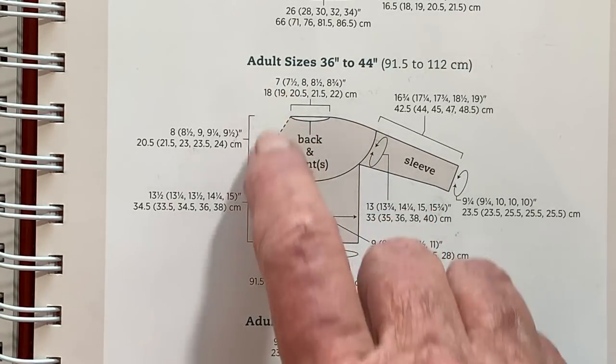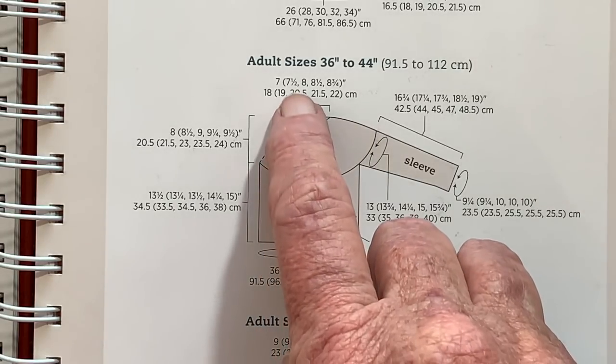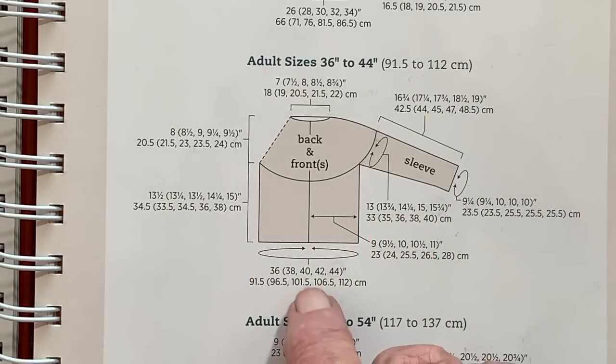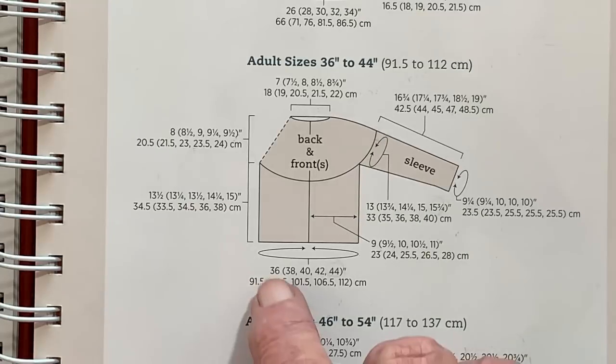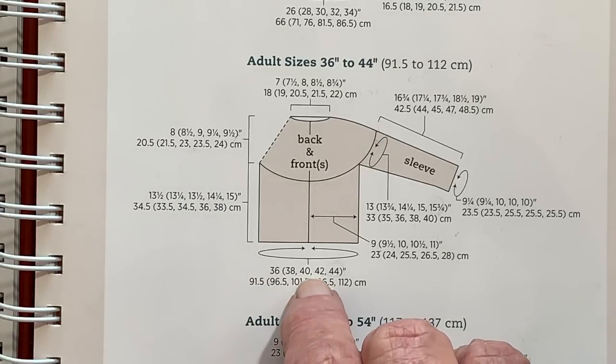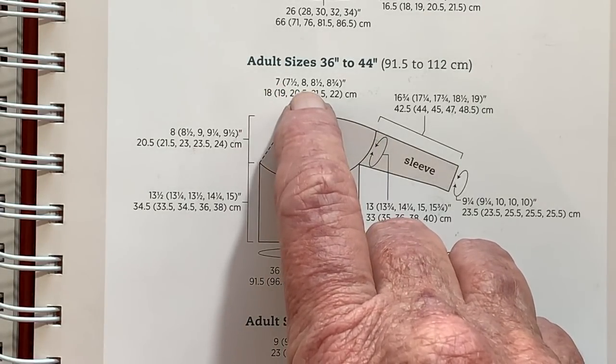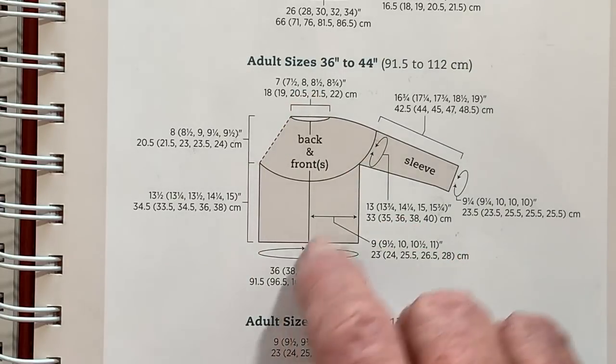So let's say you want to see the back neck opening half the circumference size 36, 7, 38, 7 and a half go together, size 40 and 8. So you can see the 40 is the third number in, 8 is the third number in. So that goes with the size 40.